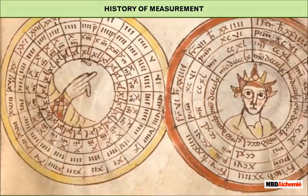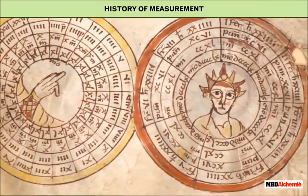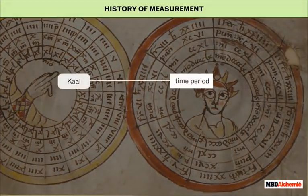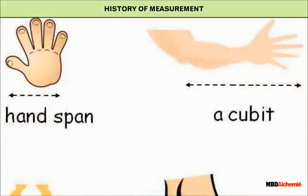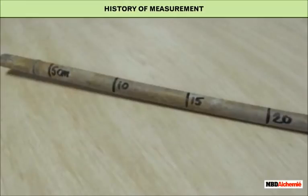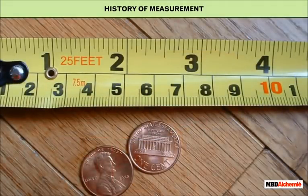In the history of measurement in Indian astrology, 'karl' was used for time period and 'gutti' was used for speed. During the middle ages, fingers, hands, and bamboos were used for measuring length. From the middle ages till the arrival of the metric system, yards, feet, and inches were used in our country to measure lengths.